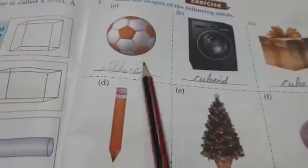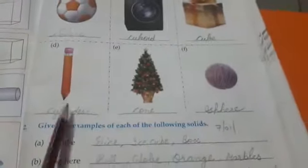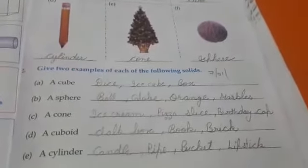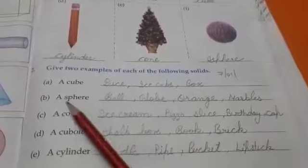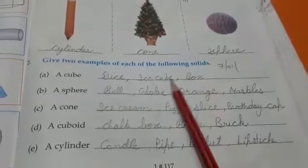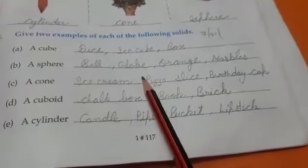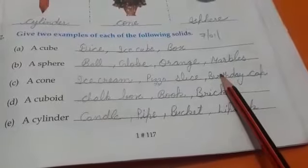Cuboid, cube, cylinder, cone, sphere. Ab aapko do do examples dene hain. Cube: dice, ice cube, box. Sphere: ball, globe, orange, marbles.